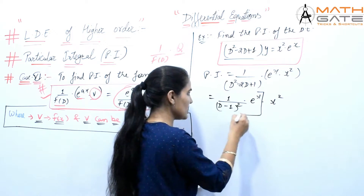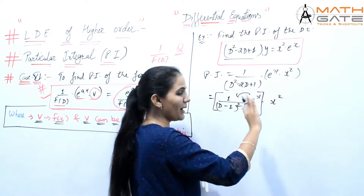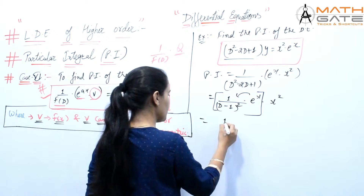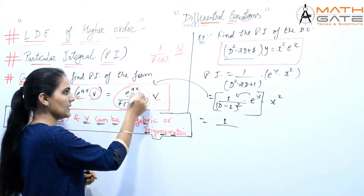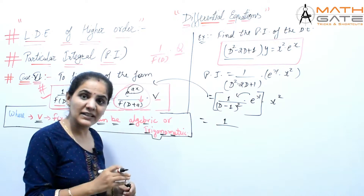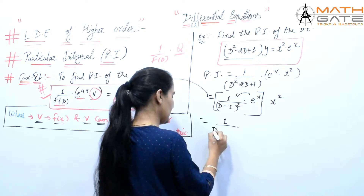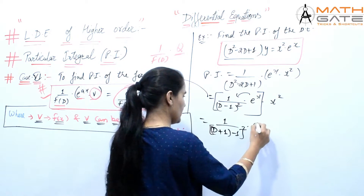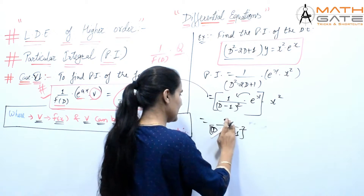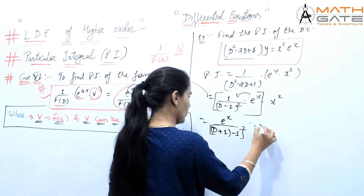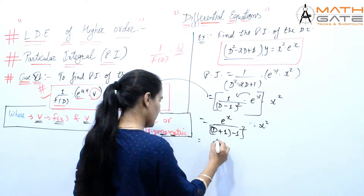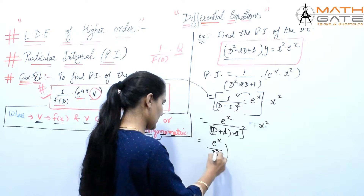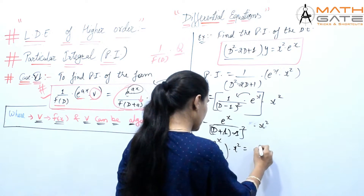Now I am going to apply e^x first and then x squared, which is V. According to this formula, when we apply e^(ax) then D becomes D plus A — so D plus 1 here. So this becomes e^x times 1 by (D+1-1)² into x², which means the minus 1 cancels, leaving only D².